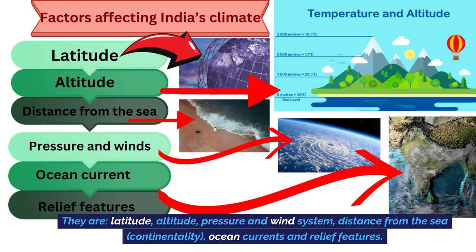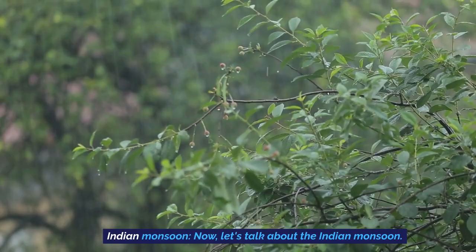The next factor is distance from the sea. Due to the distance from the sea, coastal areas are cooler than inland areas. Extreme weather conditions are more prevalent and their effect diminishes as the distance from the ocean increases. Next is the pressure and wind system — the latitude and altitude of each location affect the pressure and wind system there, and as a result it affects the temperature. The last factor is relief features — the barriers that prevent the entry of streams into the country. Cold and warm winds are blocked by high mountains.